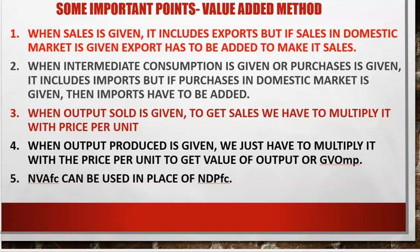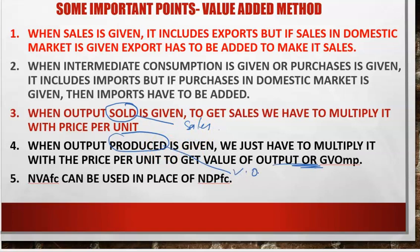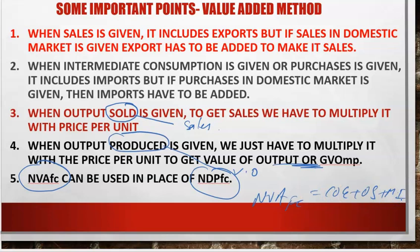If Output Sold is given, multiply with Price per Unit to get Sales. If Output Produced is given, multiplying with Price directly gives GVOMP — the Value of Output. Note carefully whether the question says Output Produced or Output Sold: Output Sold × Price = Sales; Output Produced × Price = Value of Output. Also, in merging questions combining Income Method and Value Added Method, NVAFC can be taken as NDPFC, and equated with COE, OS, and MIS.